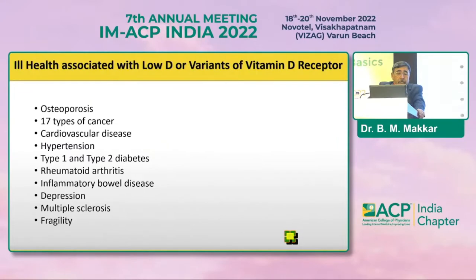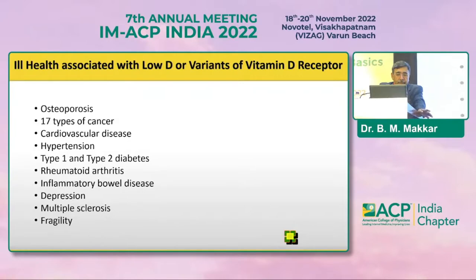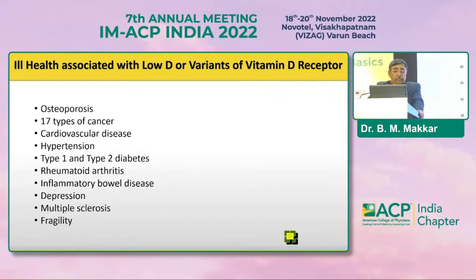A number of studies have shown that vitamin D deficiency may be associated with multiple diseases in multiple organs, including osteoporosis, different types of cancers, cardiovascular disease, hypertension, type 1 and type 2 diabetes, autoimmune diseases like rheumatoid arthritis and inflammatory bowel disease, depression, and multiple sclerosis.